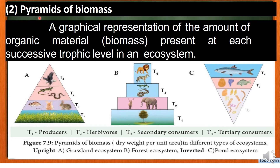Next is the pyramid of biomass — a graphical representation of the amount of organic material, that is biomass, present at each trophic level.